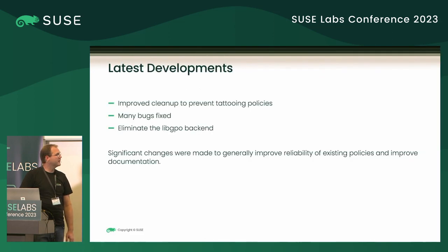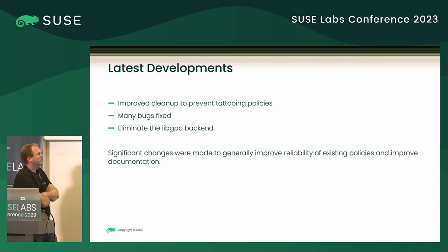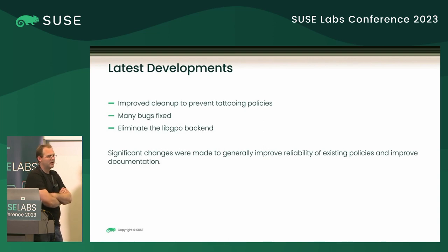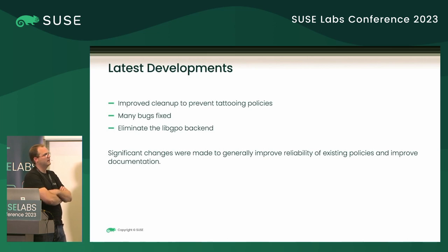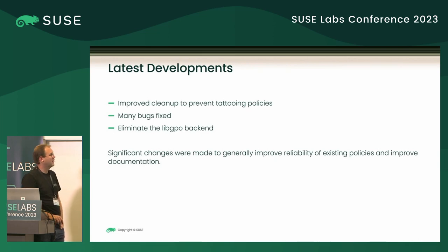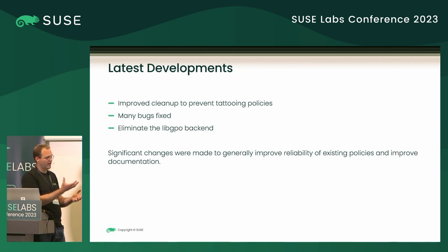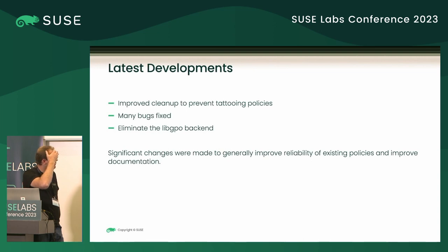One of the big fixes this past year was prevention of tattooing. Tattooing policies is when you apply a policy to a managed system and then when the policy changes you don't remove the applied policy — that's a big no-no in the industry. I improved the backend code for managing policies and preventing tattooing when, for example, a policy is removed when you have three that apply. There were a lot of bug fixes, and one of the backends was very buggy and old and has been replaced.